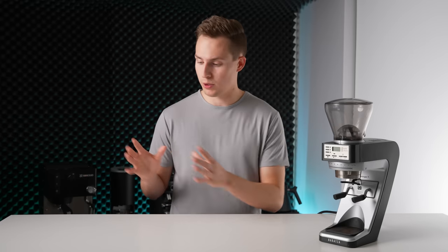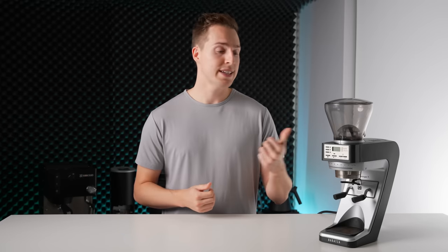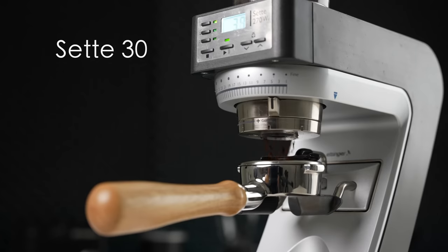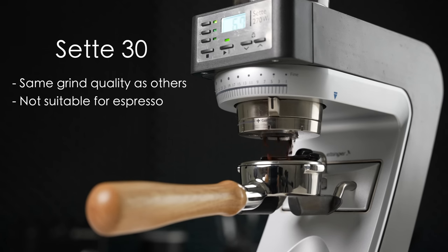So to conclude, or for those who skipped to the end of the video, the Sette lineup of grinders are solid options in their respective price brackets, with the only real downsides being the height and the very loud grinding volume. The Sette 30 will provide the same grind quality as the 270 models at a lower cost, but it is not suitable for espresso due to the large steps between grind settings.